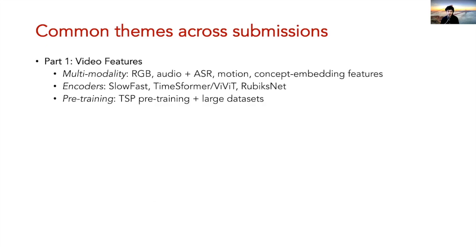Some common themes observed this year across submissions — for part one, concerning video features, there was a huge focus on improving and exploring this component. Three main subcomponents emerged: pushing the boundary in multimodal input modes, including not just RGB but also audio features and language features from ASR transcriptions, plus motion and concept embeddings. For encoders, participants used newer architectures such as SlowFast or recent efficient architectures. In terms of pre-training, a number of winning submissions leveraged temporally sensitive pre-training (TSP), along with large pre-training datasets.